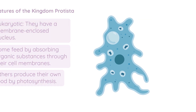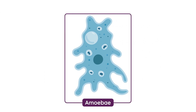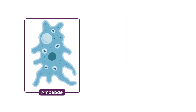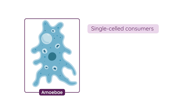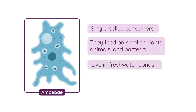Now let's take a look at amoeba as our model organism for the kingdom Protista. Amoeba consists of a single cell and amoeba are consumers. They feed on small plants, animals and bacteria. Amoeba lives in freshwater ponds and is usually found on or in the mud at the bottom of the pond.